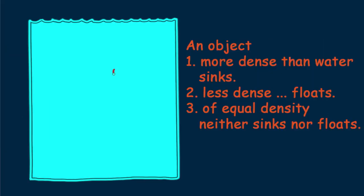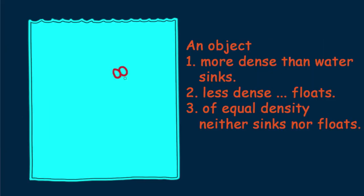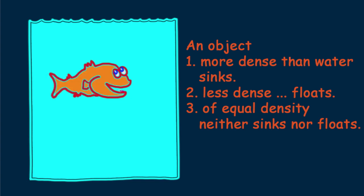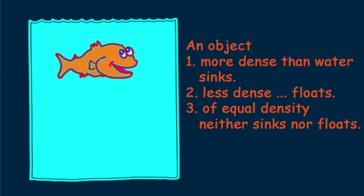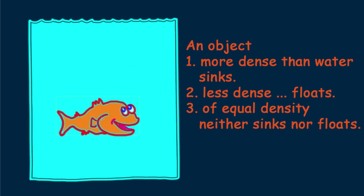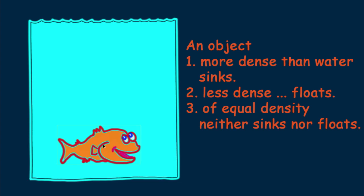A fish can similarly change its density. A fish that wishes to reduce its density and buoy to the surface expands its air sac and increases its volume a bit, and up it goes. If it tightens and reduces the volume of its air sac — too small to see here — its density increases and it sinks deeper in the water, without effort.